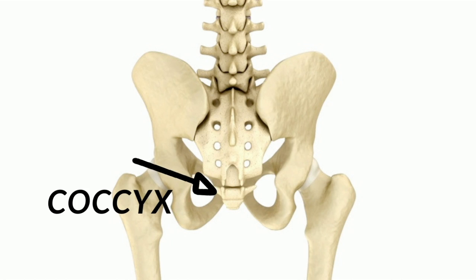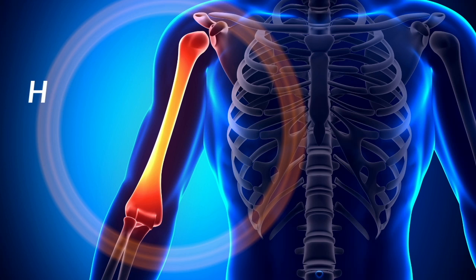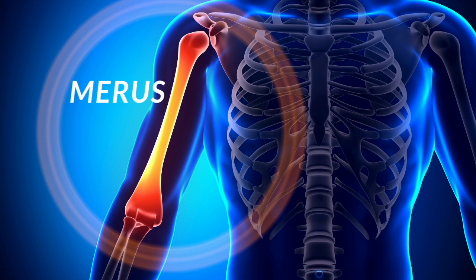Next we have your arm bones. At the very top of your arm is your humerus — it's a really long bone. It's easy to remember because when you hit your humerus, also called your funny bone, it's not so funny at all. Definitely not humerus.